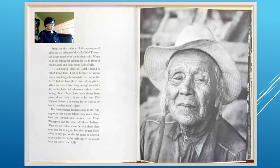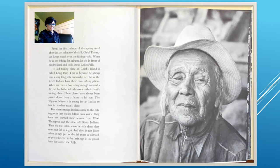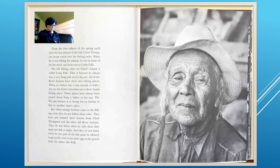From the first salmon of the spring until after the last salmon of the fall, Chief Thompson keeps watch over the fishing rocks. All of the river Indians have their own fishing places. When an Indian boy is big enough to hold a dip net, his father takes him to their family fishing place. These places have always been passed down from father to son. The Wayams believe it is wrong for an Indian to fish in another man's place. But strange Indians who come to the fishing rocks do not follow these rules — they do not listen when he says part of the fish must be allowed to go up the river to lay their eggs.